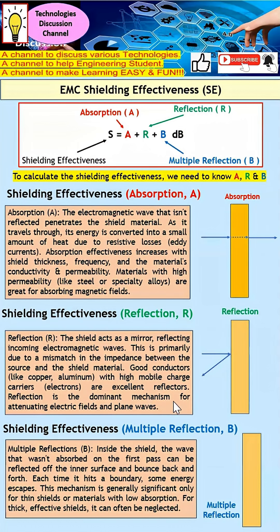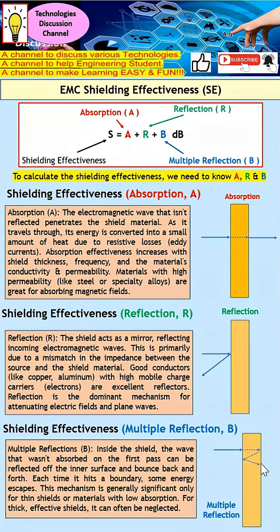Last but not least, what is multiple reflection? Let me explain with an example. With absorption, when the wave lands at another boundary, some may be reflected back. Those reflected back, once they hit another boundary, may be reflected back again. As a result, some of them actually leak out. This is what we call multiple reflection — the wave bouncing back and forth between boundaries.